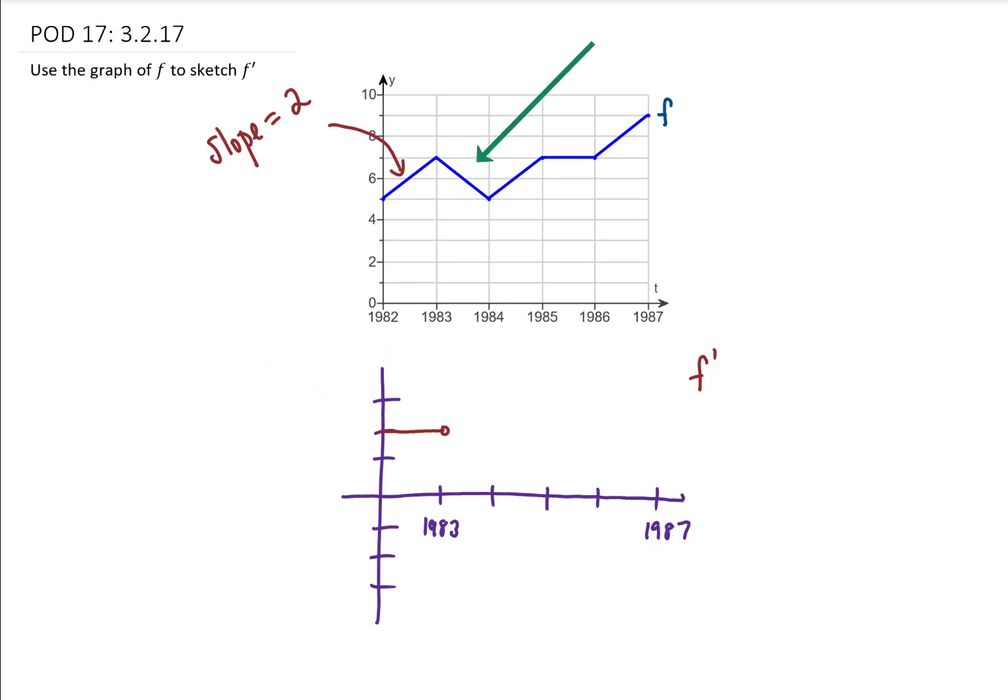And now let's ask the question, what is the slope of the segment of our original function between 1983 and 1984? Well, it looks to me like our slope of this piece is negative 2. Because our slope here is negative 2, that means that the graph of our derivative between 1983 and 1984 is just going to be negative 2.